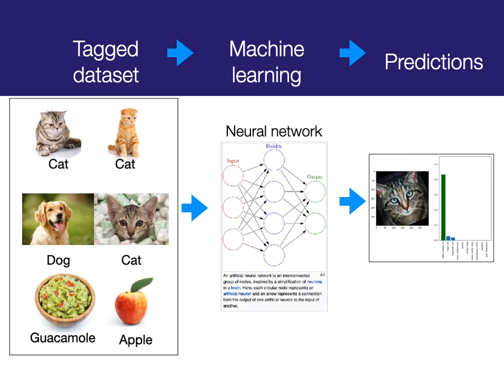Then it makes predictions. You feed new images into the neural network and, having learned from the data set, it can predict what a new image is of. Here you see an image of a cat, and it has predicted correctly that this is a tabby cat. It has levels of certainty — it's a bit more than 80% certain this is actually a cat.